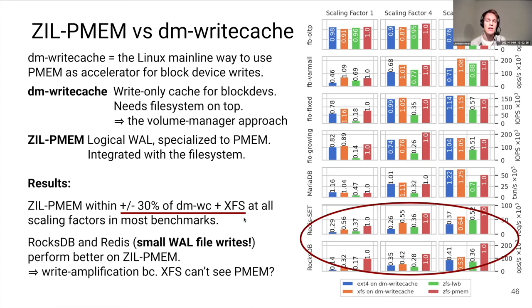What I observed is that in the workloads I looked at, zilpmem always lands within plus or minus 30% of the throughput achievable with dm-writecache with XFS on top of it. This is good because, in contrast to zil-lwb, we can actually be a serious competitor to this technology in terms of performance. For workloads doing very small writes like RocksDB, there's a big advantage for zilpmem because we have less write amplification — XFS sees a block device and pads everything to 4KB, whereas zilpmem uses PMEM natively and writes small log records directly.